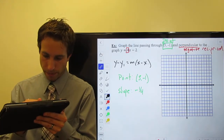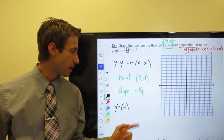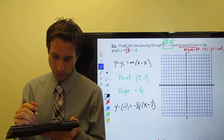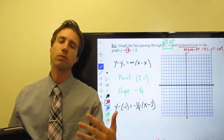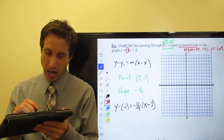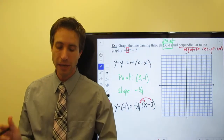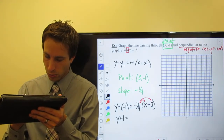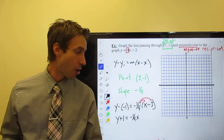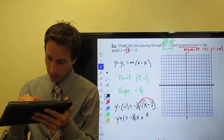Now we're all set — plug and chug. Y minus — careful, watch your signs — my y1 is a negative one, so minus a negative one is equal to negative one-fourth times x minus three. It's a fraction, I know. We're in geometry — fractions are our friends. I'm going to distribute that one-fourth through the parentheses. A negative times a negative is a positive, so I have y plus one is equal to negative one-fourth x, and negative times negative gives positive, so one-fourth times three is three-fourths: plus three-fourths.